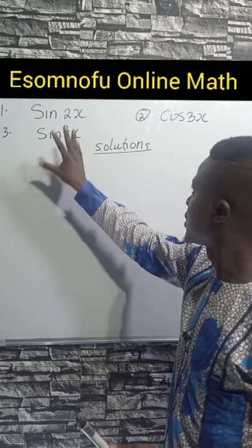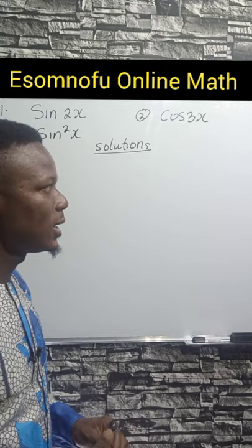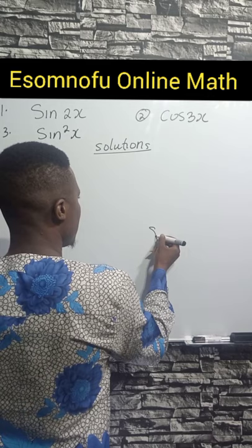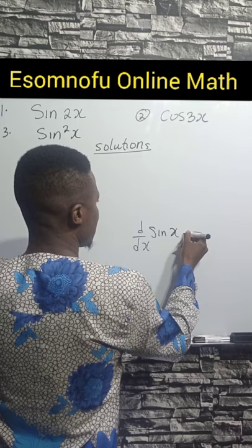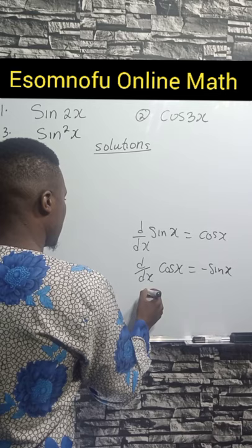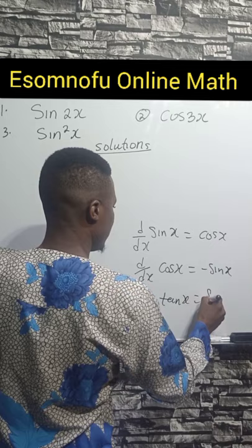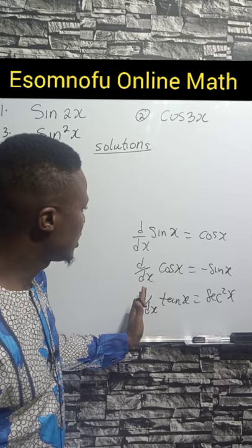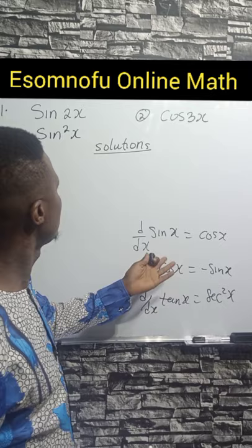We are asked to differentiate the following trigonometric functions. Before you can do well in trigonometric differentiation, you should know the basic derivatives. d/dx of sin(x) gives cos(x). d/dx of cos(x) gives minus sin(x). And d/dx of tan(x) gives sec²(x). Once you know this, differentiating any trigonometric function will not be a trouble to you.